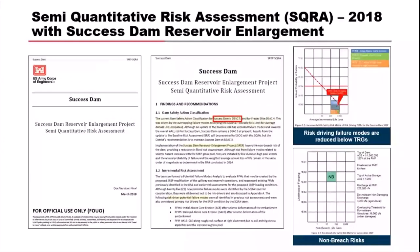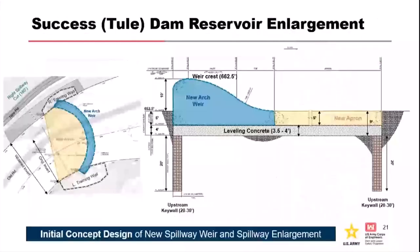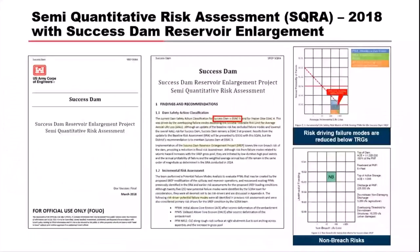Prior to the RID being implemented, the team did a semi-SQRA in 2018 on this design. With higher spillway crests and lighter flows, they redid the hydraulics analysis and found the design had lowered risk because of the proposed design — putting us down in the DSAC-3 range for this structure.